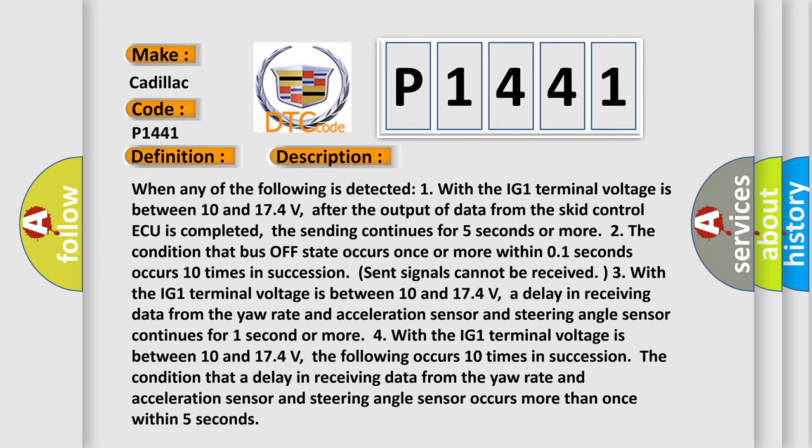When any of the following is detected: One, with the IG1 terminal voltage is between 10 and 17.4 volts. After the output of data from the SKID control ECU is completed, the sending continues for five seconds or more. Two, the condition that bus off state occurs once or more within 0.1 seconds occurs 10 times in succession.